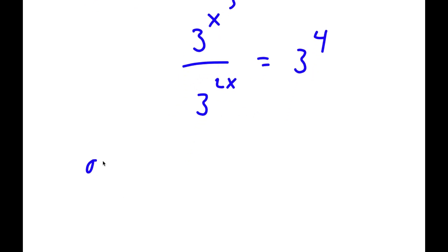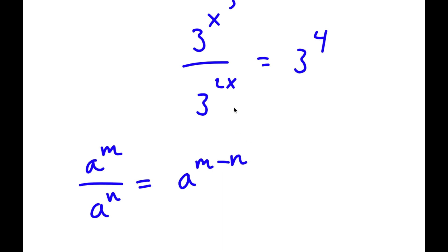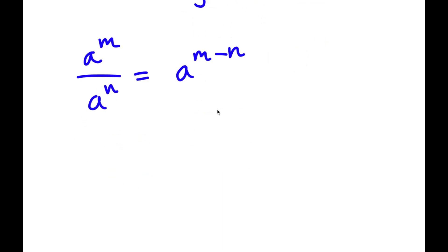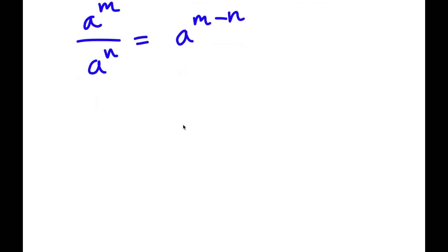Now if I have something in the form a to the power of m over a to the power of n, this is equal to a to the power of m minus n. So 3 to the power of x cubed over 3 to the power of 2x equals 3 to the power of x cubed minus 2x, which is equal to 3 to the power of 4.